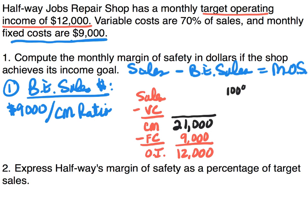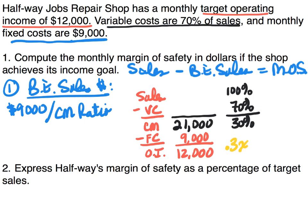Sales is always 100% of itself. Variable costs are 70% of sales, so contribution margin must be 30% of sales. Since contribution margin is 30% of sales and sales is unknown (x), we have: 0.30x = $21,000. Dividing both sides by 0.3 gives us sales of $70,000. Variable cost is 70% of $70,000, which is $49,000, and $70,000 minus $49,000 confirms contribution margin of $21,000.